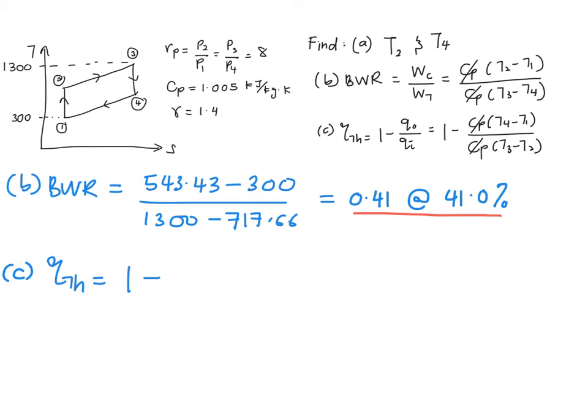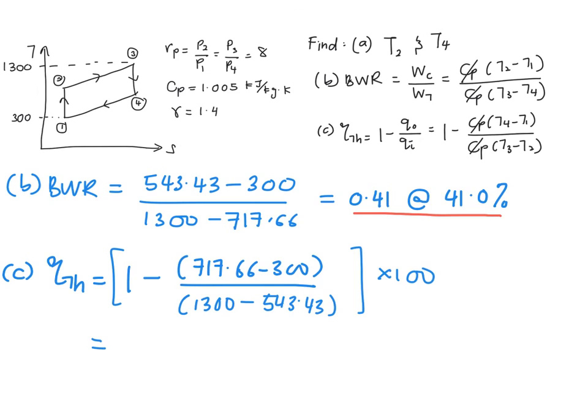Next is how to find your thermal efficiency, where you make use of this relation that we expanded earlier. You plug in all the values: T4, T1, T3, and your T2. And finally, you are going to get your answer, which is 44.79% thermal cycle efficiency.